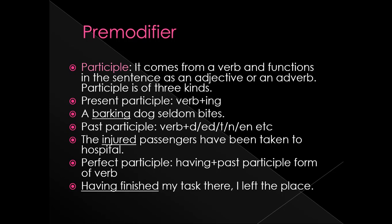For perfect participle, the structure is 'having + past participle form of verb.' Example: 'Having finished my task there, I left the place.' Perfect participle is less frequently used. Present participle and past participle, however, are very frequently used as modifiers — both as pre-modifiers and, as we will study later, also as post-modifiers.